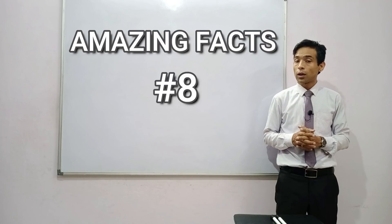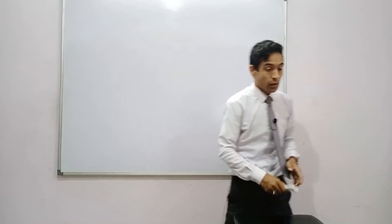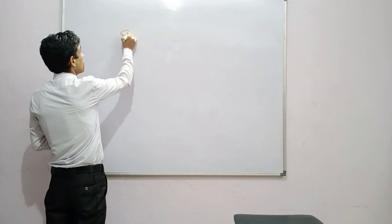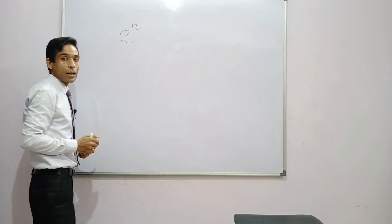He gave a formula to find out a special type of prime numbers, later called Mersenne primes. Let us find out what are Mersenne prime numbers. If we take the number of the form 2 to the power number N, where N is a natural number.